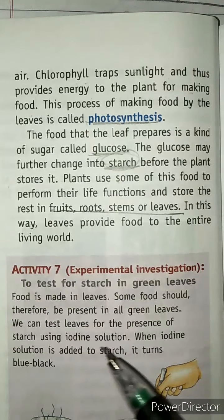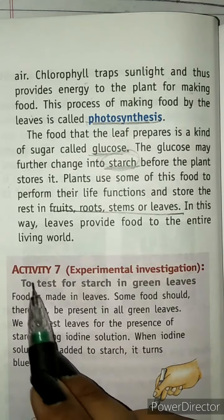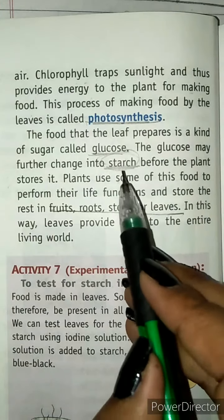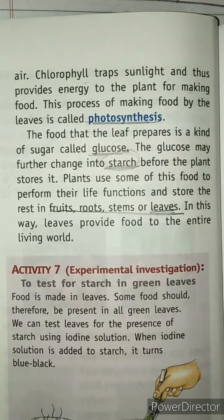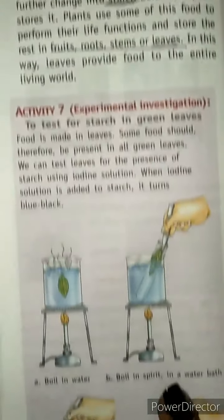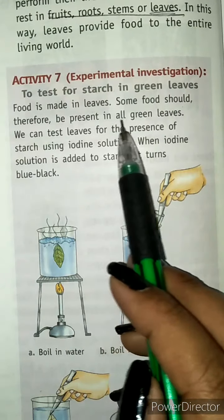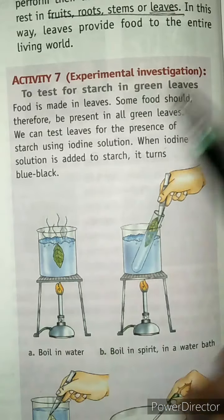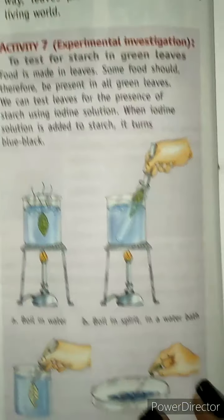Let's move to Activity 7: an experimental investigation to test for starch in green leaves. Since starch is extra food stored in leaves, we can test for it using iodine solution. When iodine solution is added to starch, it turns blue-black in color.